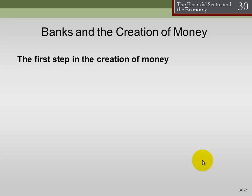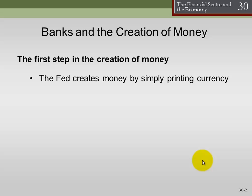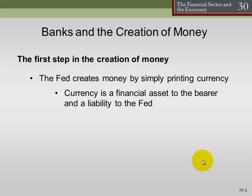Let's take a look at this process. The first step is the Fed creates this outside money. We could say by simply printing currency, though that's actually an oversimplification — the Fed doesn't just print currency. In fact, most of the money supply has no physical existence whatsoever; it's simply represented within a computer system, it's electronic. But for simplicity, let's think about this as currency.